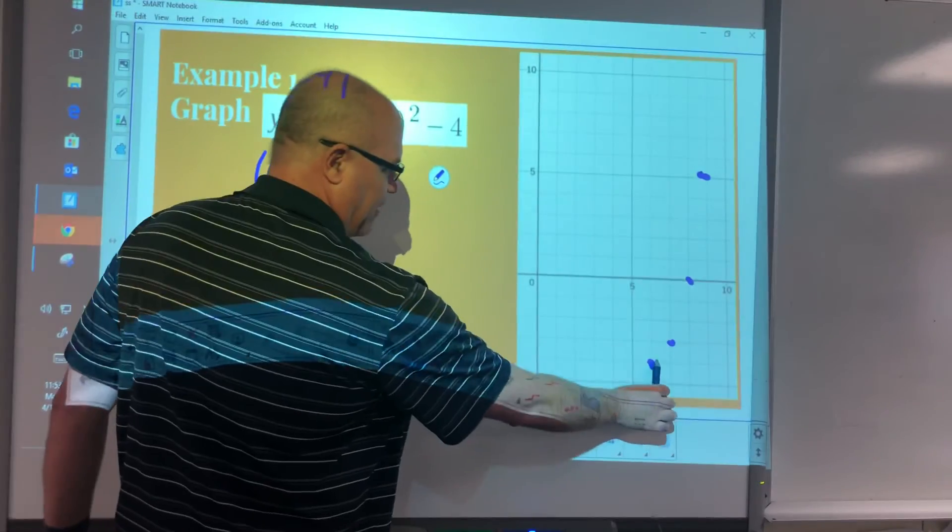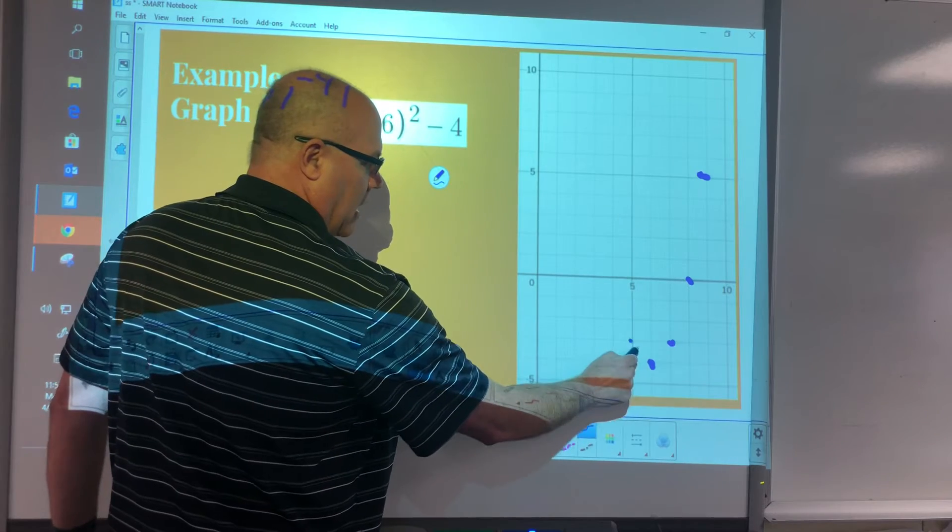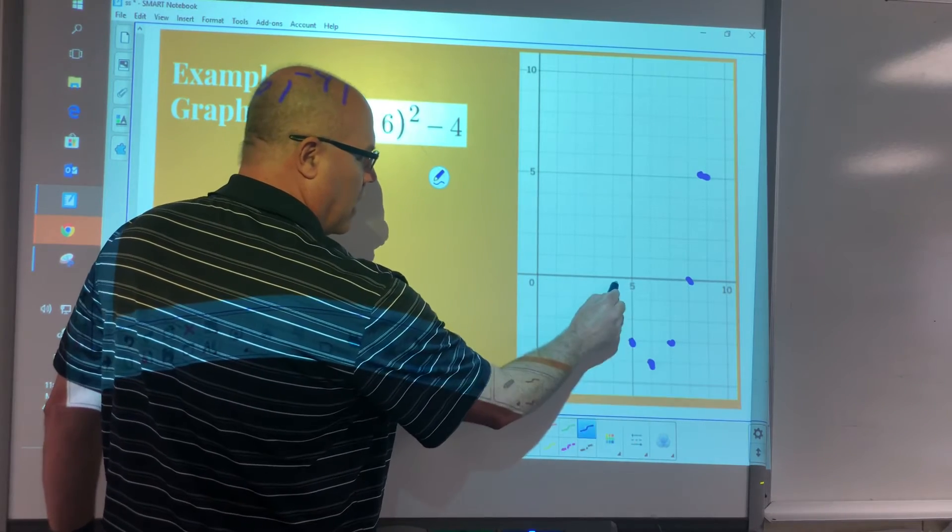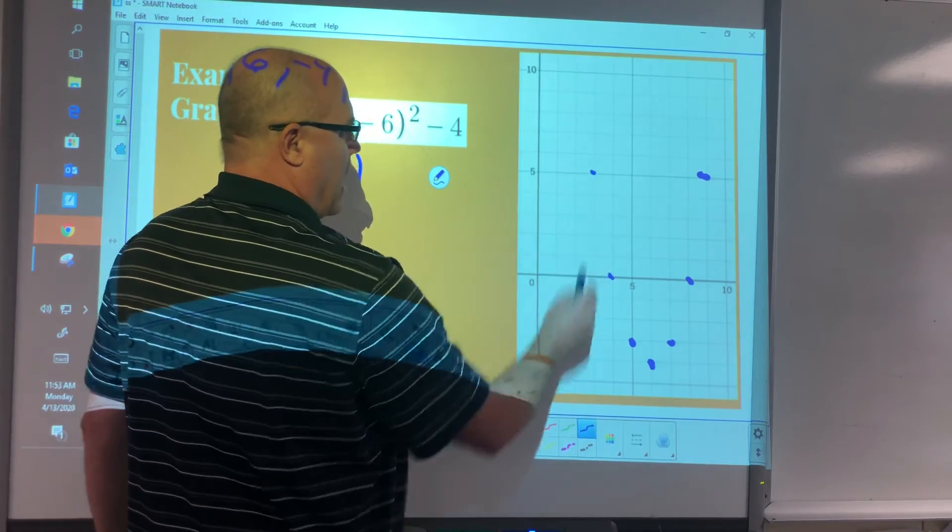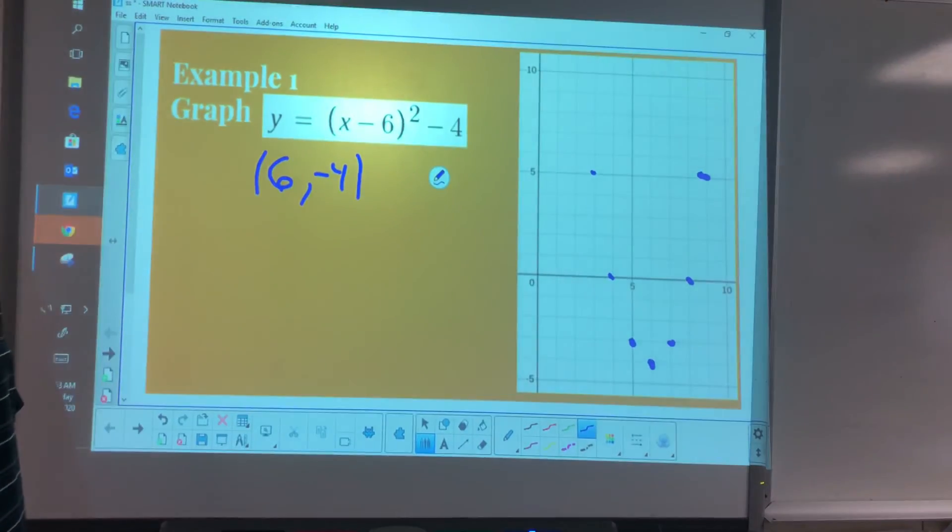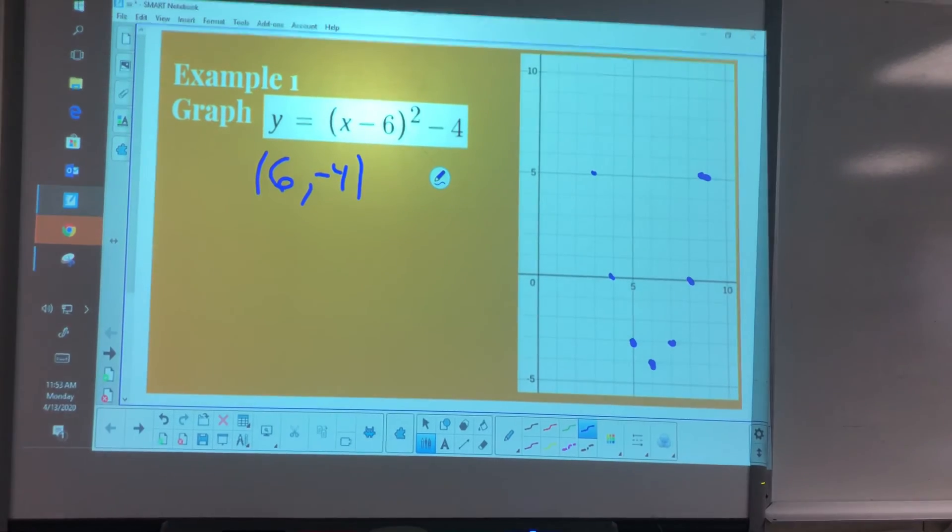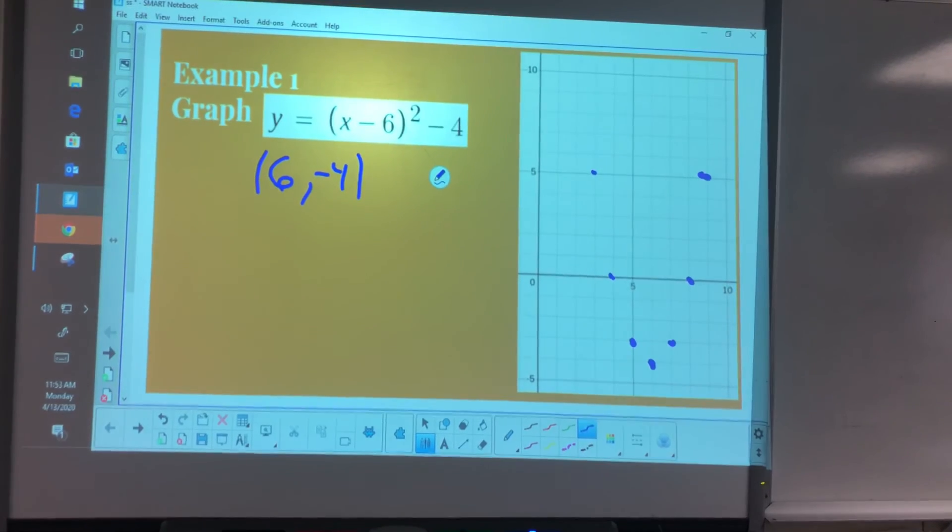Or you just do the same thing: over 1, up 1, over 2, up 4, over 3, up 9. I'm not going to draw it right now, but you get the idea of the parabola. It's that simple, just use the a value with the vertex.